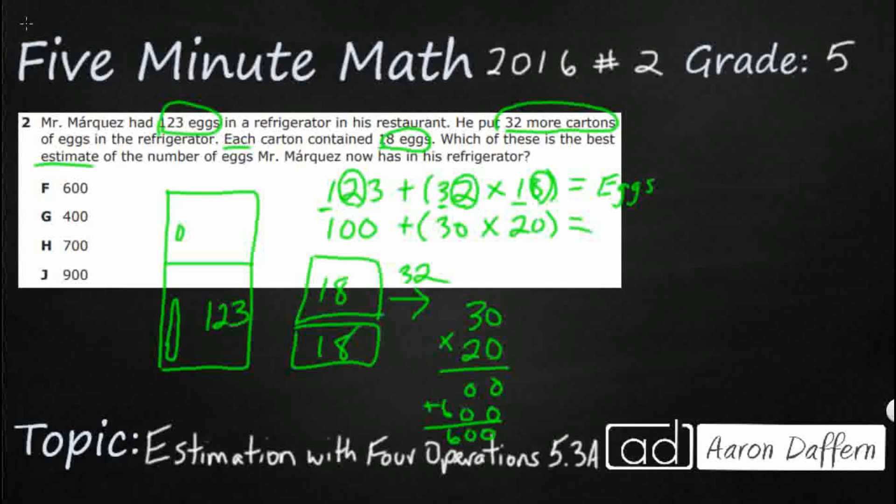The shortcut here is, since we have zeros, what we could do is we can just multiply our two numbers that are not zero together, six, and then add the zeros that you see, 600. Either way, it gets you 600, so 600 right here, plus this 100, looks like it's going to be around 700, so H.